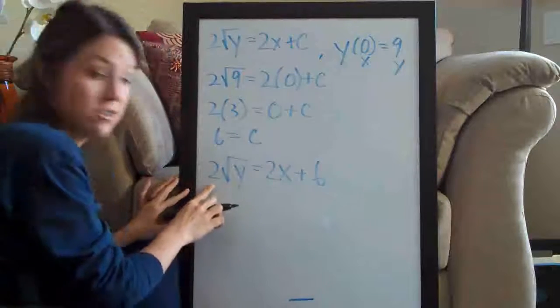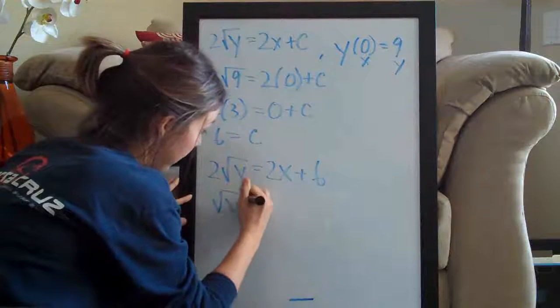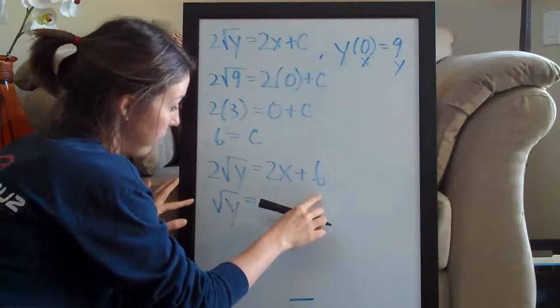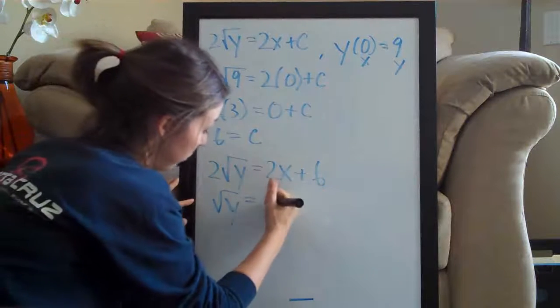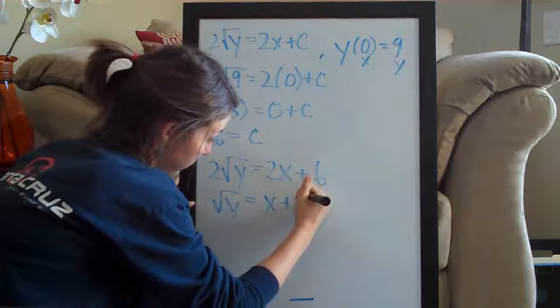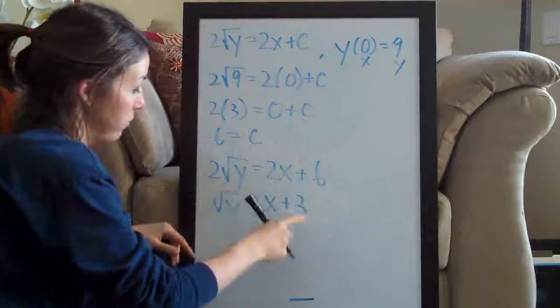Let's divide both sides by two. We'll be left with the square root of y equals—and if we divide this whole side of the equation by two—we end up with x plus 3. Two divided by two is one, six divided by two is three.